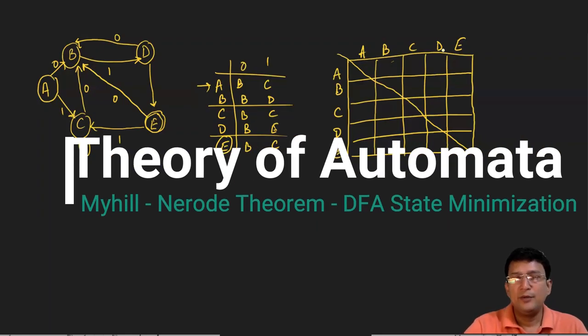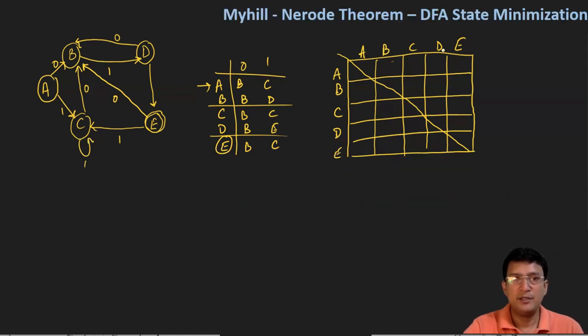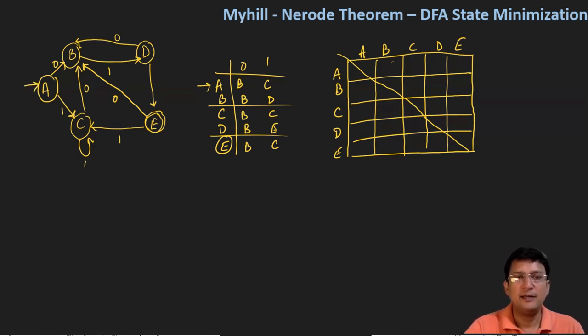Hello, everyone. We are going to see one more example related to the Myhill-Nerode theorem for DFA state minimization. A DFA is given where A is the start state and E is the final state.